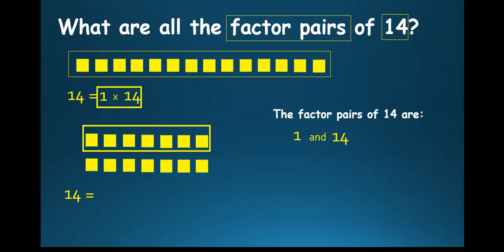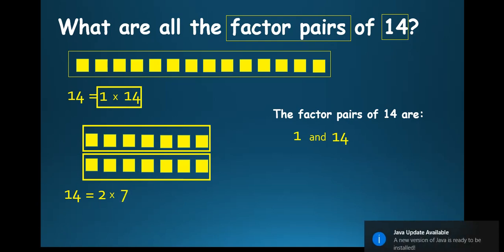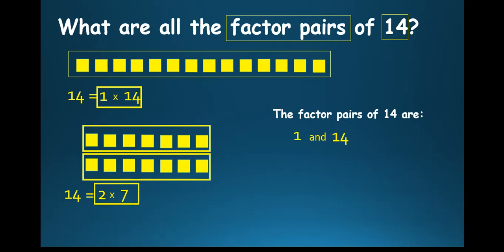And there are 2 rows. So in this case, we're going to write 2 times, and in each row there are 7 yellow boxes. So that's 2 times 7. So we can say that 2 and 7 is also a factor pair of 14.